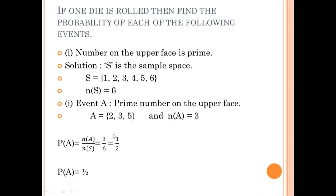The number of event A is equal to 3. Therefore, P(A) = number of A upon number of S = 3/6 = 1/2. So there is a half chance of getting a prime number.